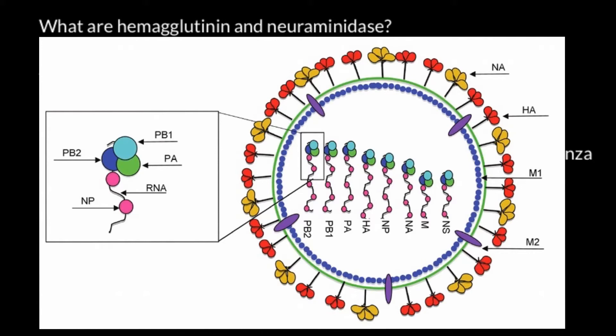The capsid is made of one protein and is closely associated with the envelope. This virus doesn't produce the envelope itself — it acquires it when exiting the cell, so it belongs to the host cell. We also see ionic channels and two types of surface proteins: NA, which stands for neuraminidase, and HA, which stands for hemagglutinin.